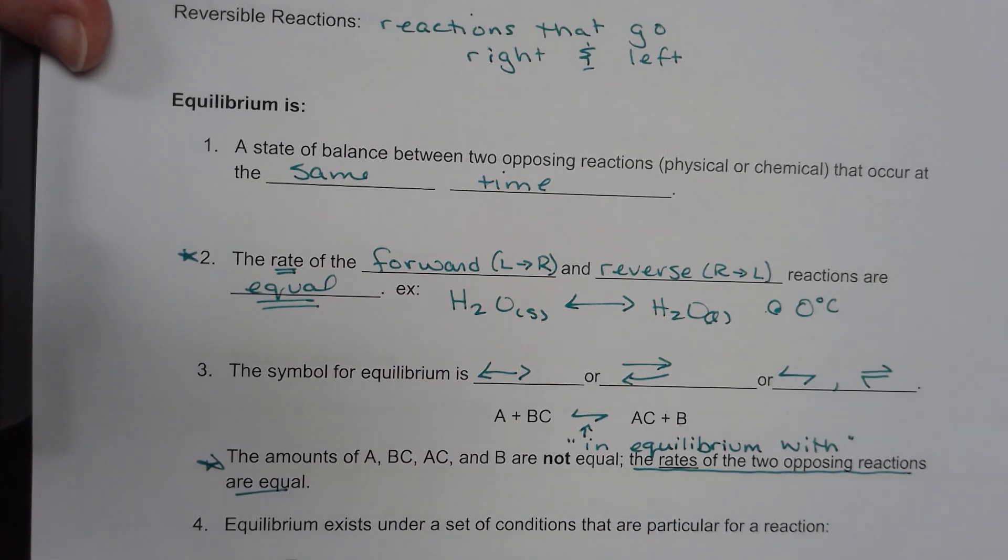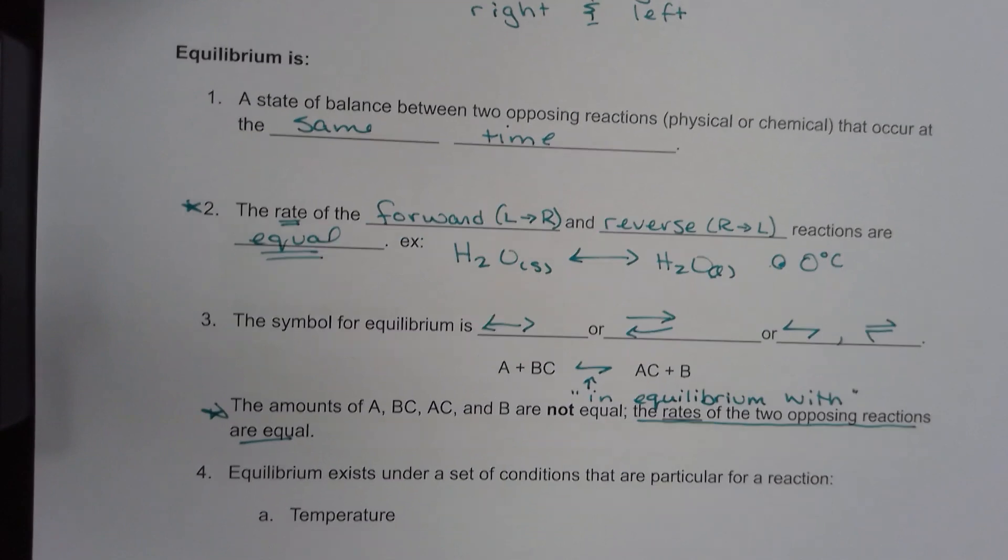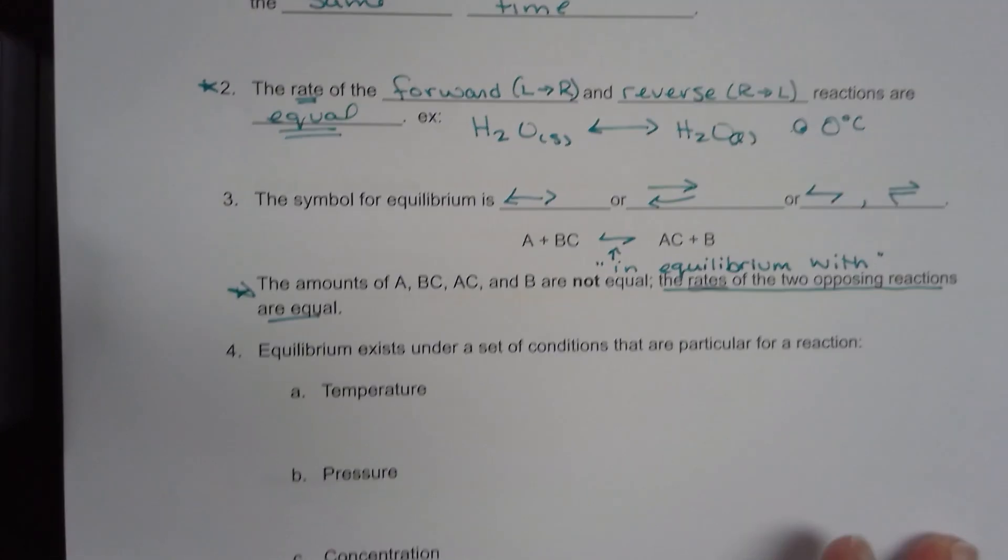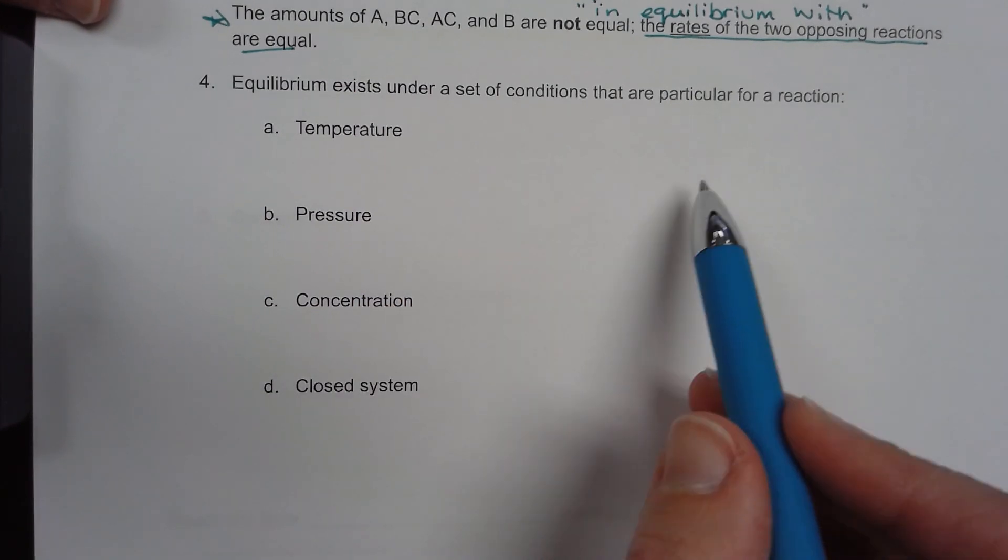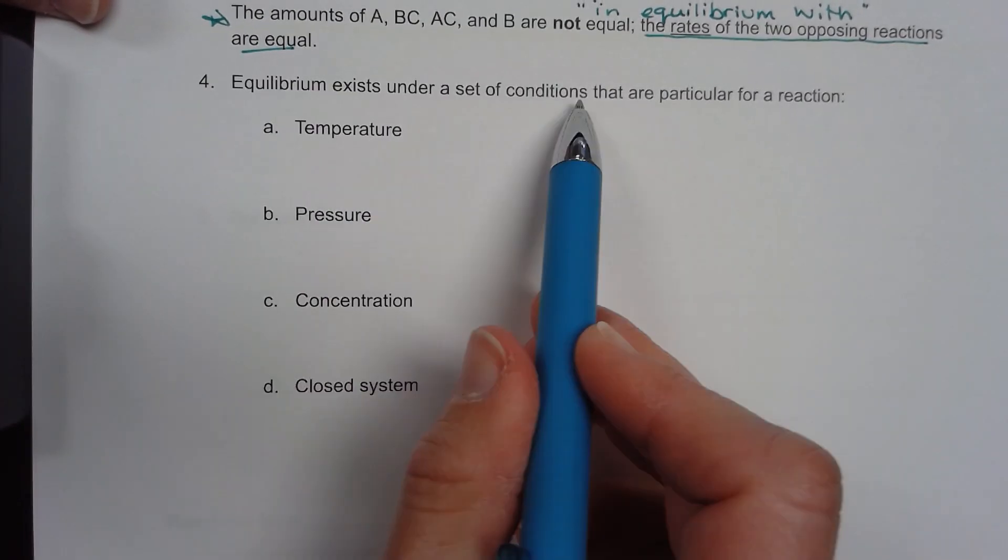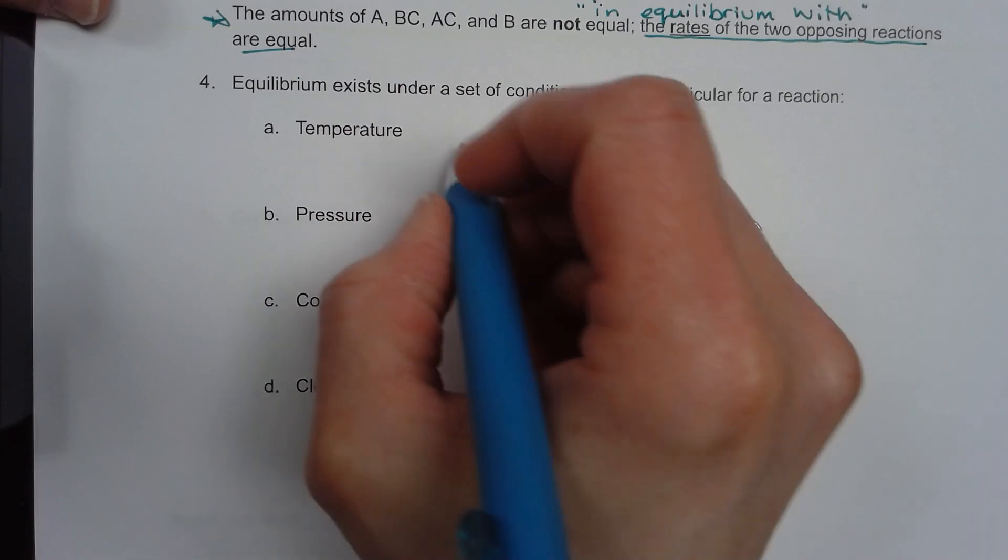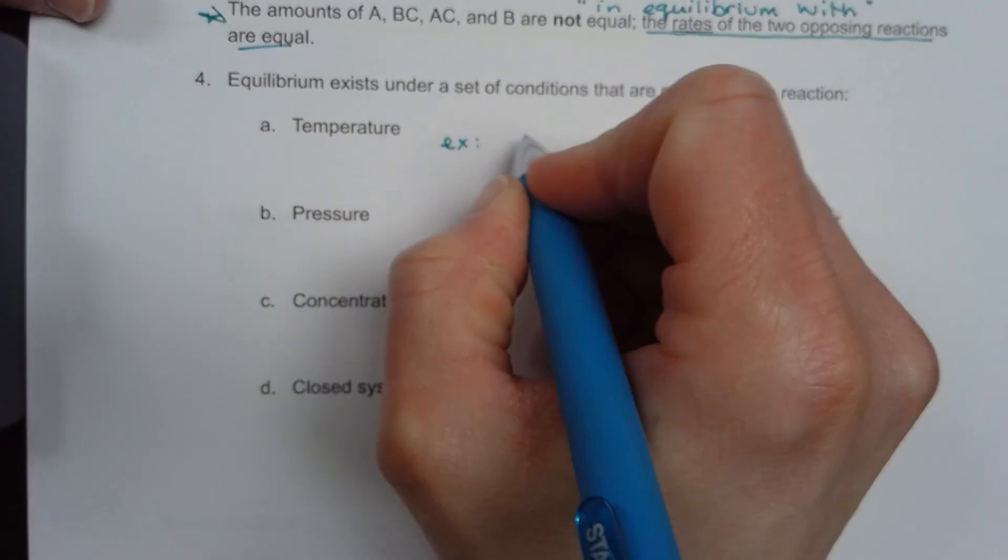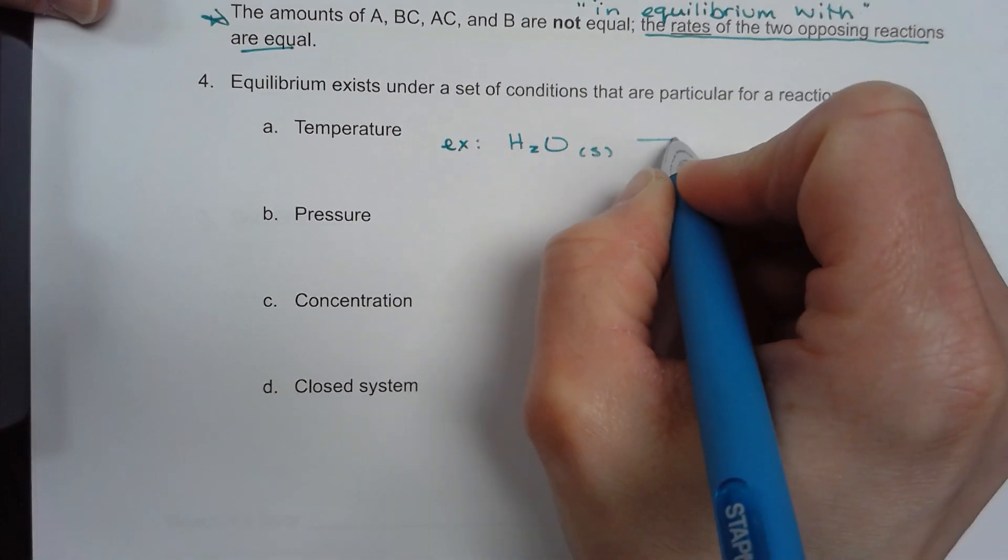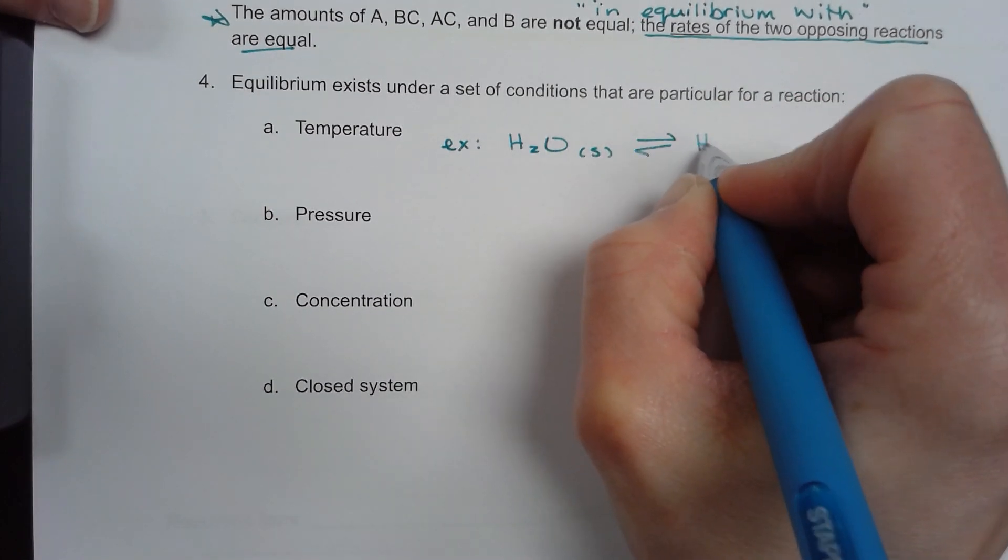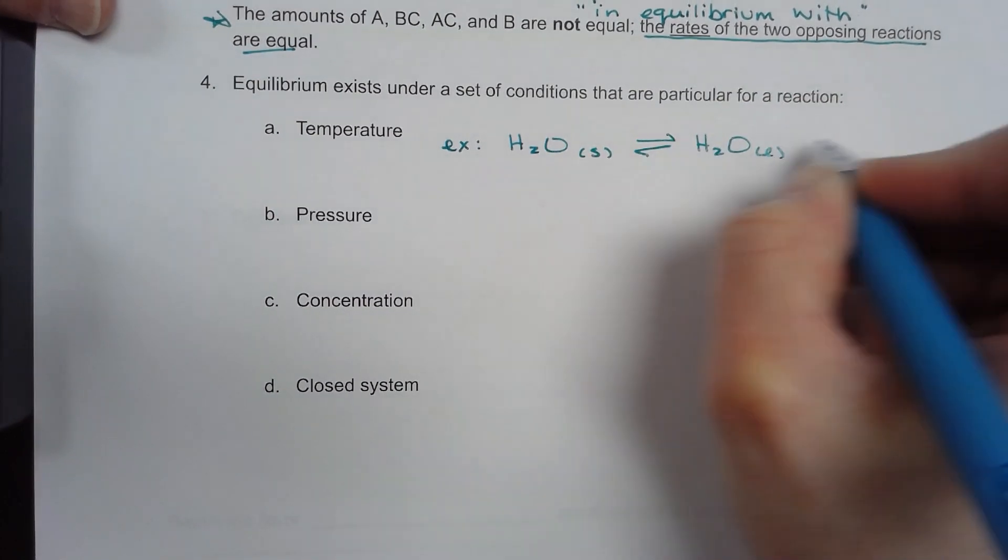The forward reaction is the same as the reverse. And our fourth is equilibrium exists under a set of particular conditions for a reaction temperature. An example we've already written down. H2O solid can only happen going to H2O liquid in equilibrium at zero degrees Celsius.